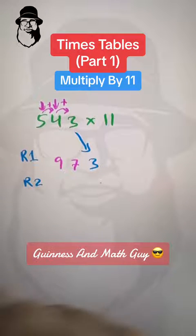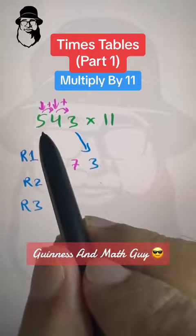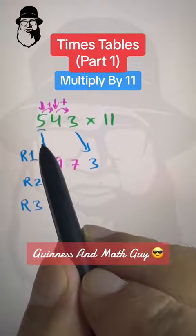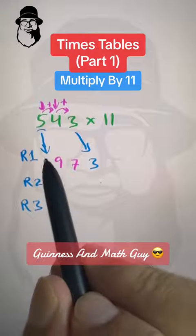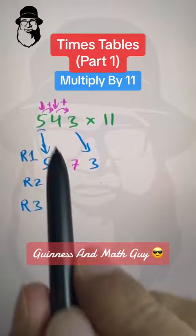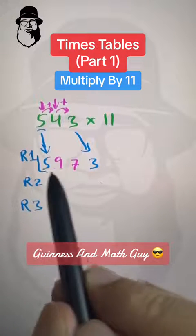And rule number three is we bring down the last digit as it is. So we have 5 here. That's the answer 5973.